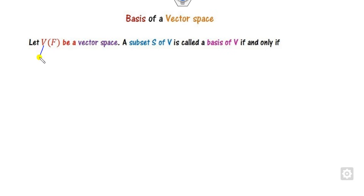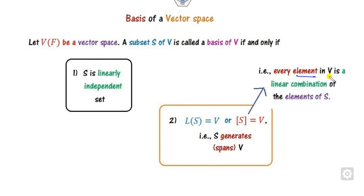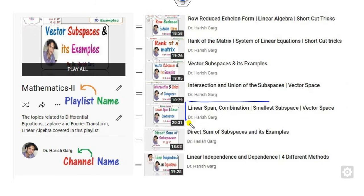First of all, what is the basis? If V is your vector space over the field F, then any subset S of V is called a basis if and only if two conditions are satisfied: S must be linearly independent, and the span of S is V. This means every element of V can be written as a linear combination of the elements of S. We have already discussed these concepts in previous lectures on linear span and linear independence.